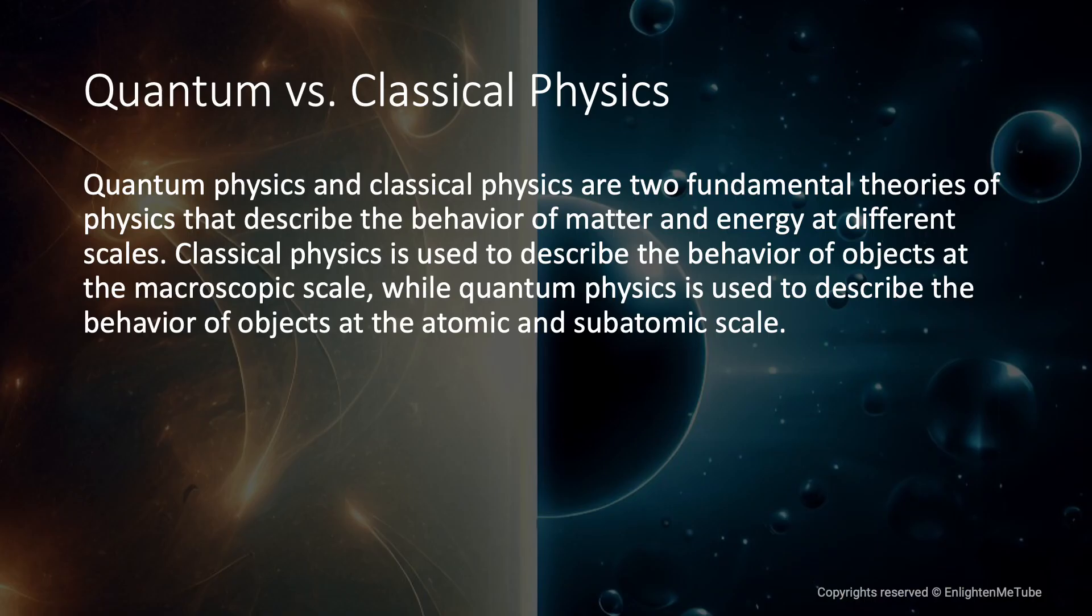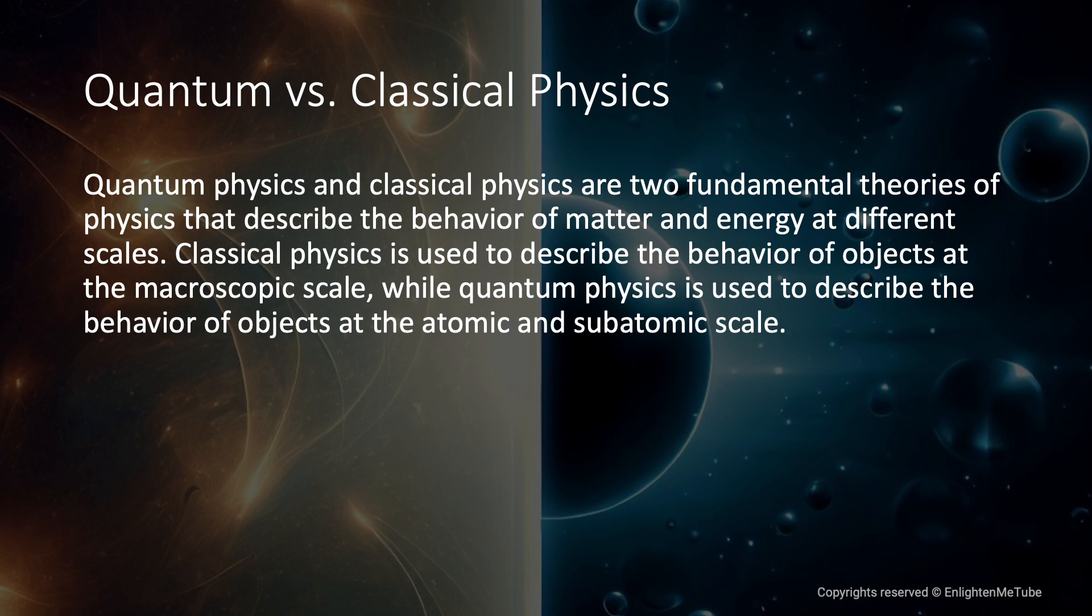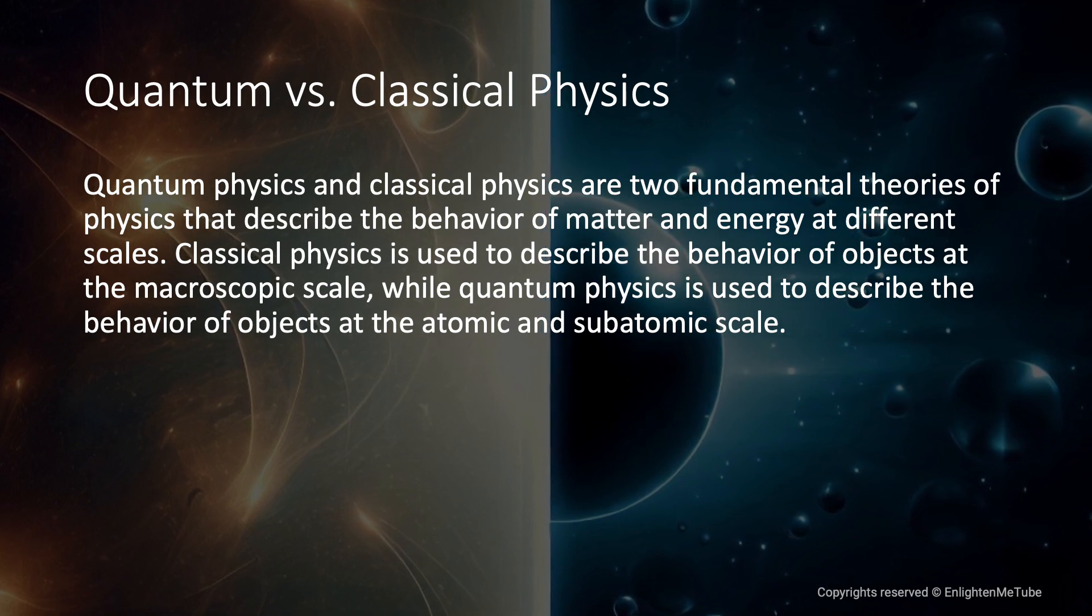In classical physics, objects follow predictable paths. In the quantum realm, things behave quite differently.